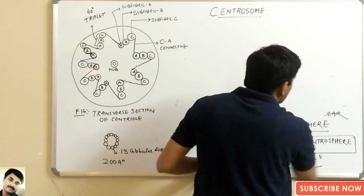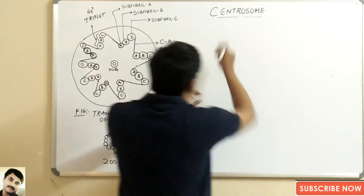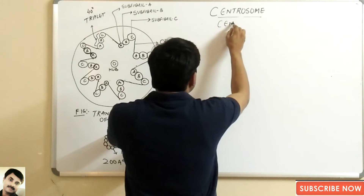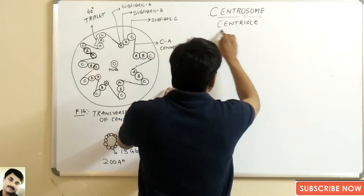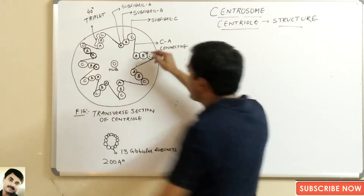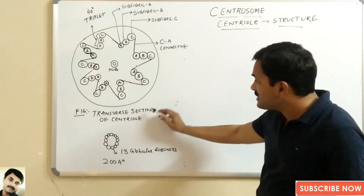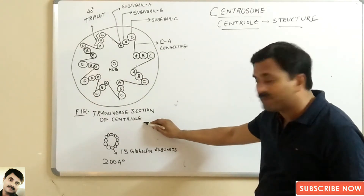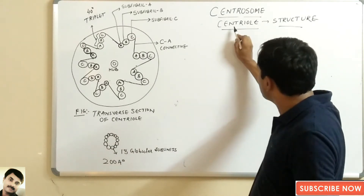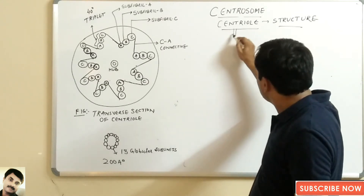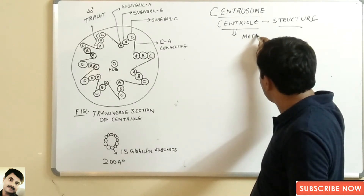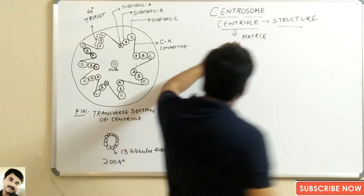Looking at the structure of the centrosome, we will discuss the centriole structure. This is the transverse section of a centriole. As we know, centrioles are membrane-less, so they are not surrounded by any membrane, but they are present in a matrix.